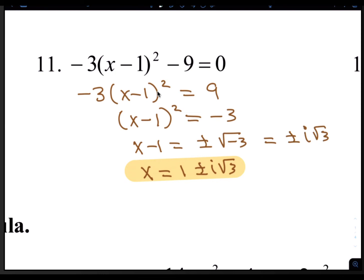Again, solving by square roots. So we'll move the 9 over by adding it. Then we'll divide by negative 3 on both sides, which gives us x minus 1 squared equals negative 3. Then we take the square root, which gives us x minus 1 equals plus or minus the square root of negative 3, which is plus or minus i square root of 3. Then you move the 1 over by adding it. So x is 1 plus or minus i square root of 3.